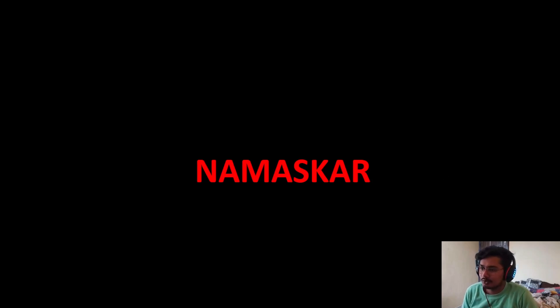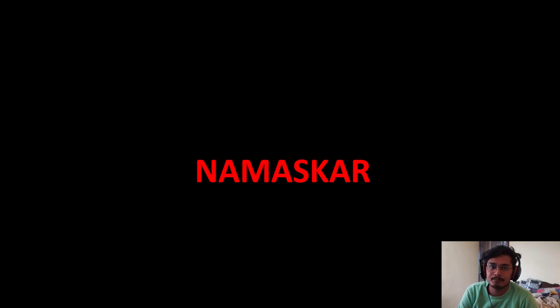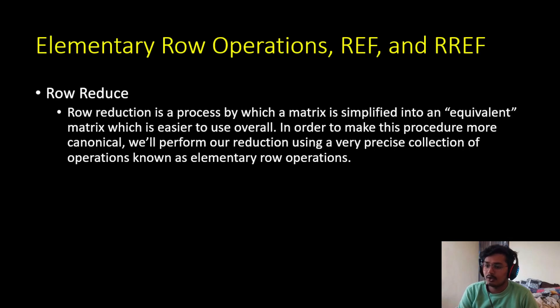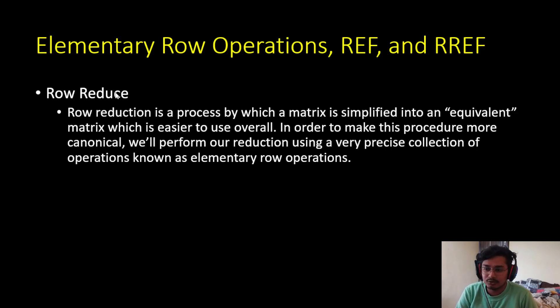Hello and namaskar. From today's video onward we are going to see the concepts of row echelon form and reduced row echelon form, by using which we are going to solve matrices and systems of linear equations. Before making a word we have to first learn the letters, so let's learn the letters of solving the system of linear equations — that is the elementary row operations. Elementary row operations are some operations defined using which we convert any matrix to row echelon form or reduced row echelon form.